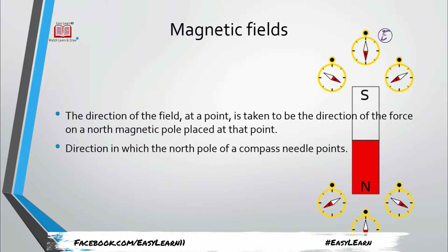The direction of the magnetic field is the same as the direction of the force acting on a north pole placed at that point. However, the issue is that a magnet always has both north and south poles attached. It is not possible for a magnet to contain only a north pole. As discussed in the previous episode, if you try to divide a bar magnet, each piece always produces separate north and south poles.